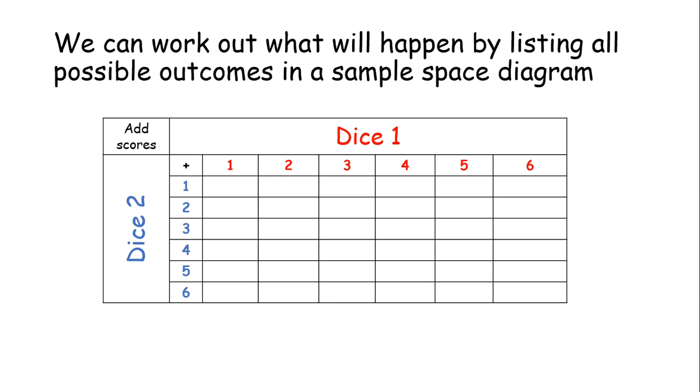So, if we add one and one together, we get two. If we add one and two together, we get three. If we add one and three together, we get four, five, six, seven. Okay, so we're just adding together these numbers in blue and red, and we're writing our answer where those two intersect.